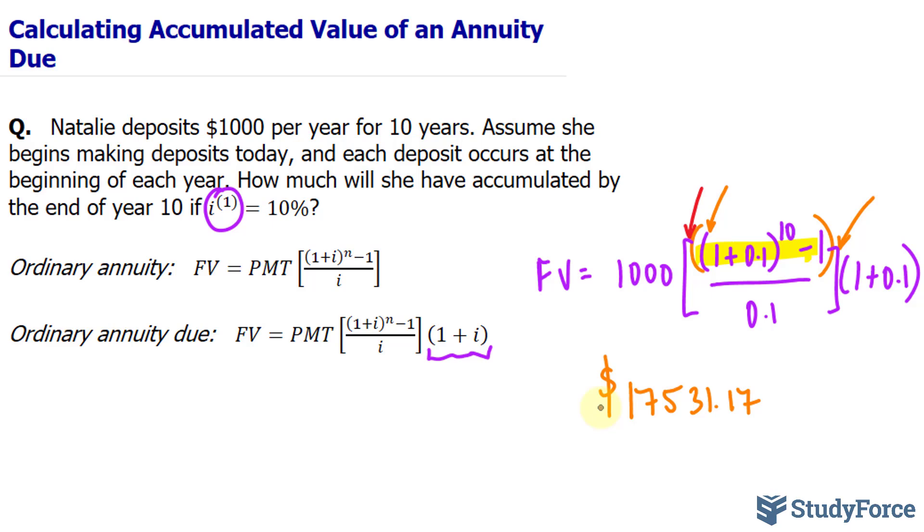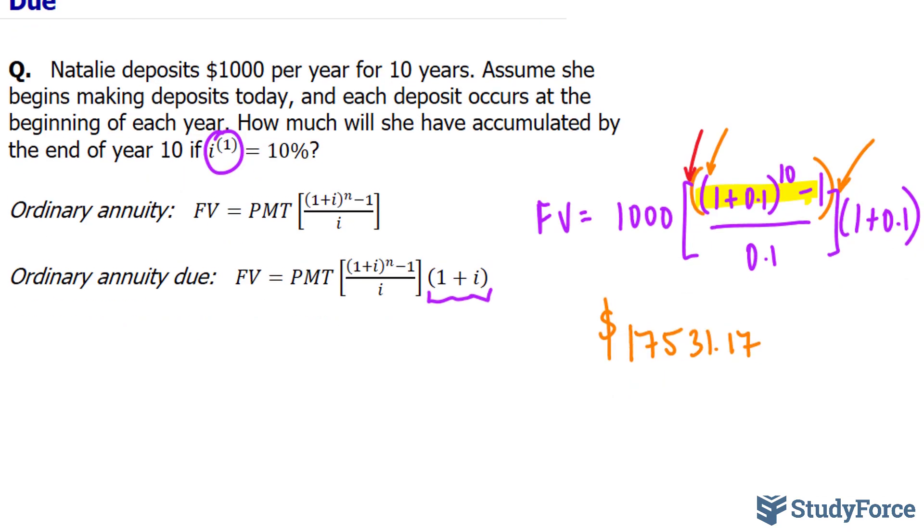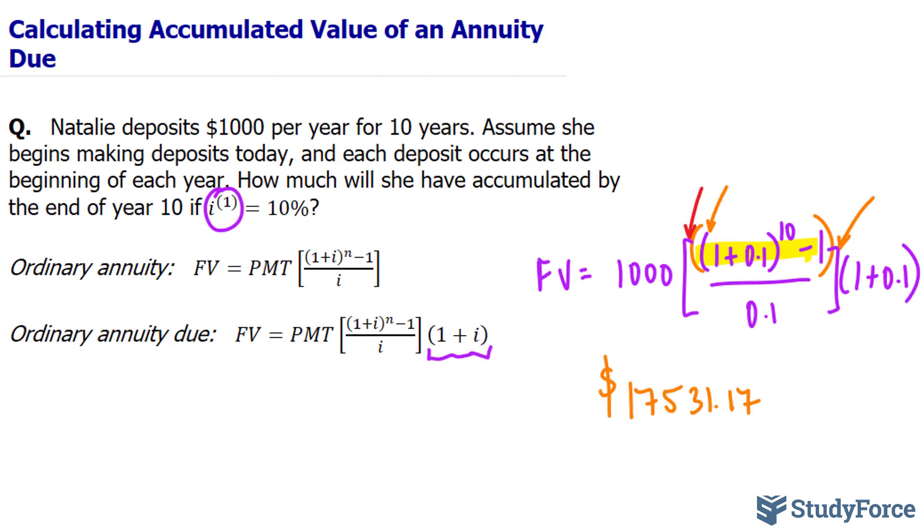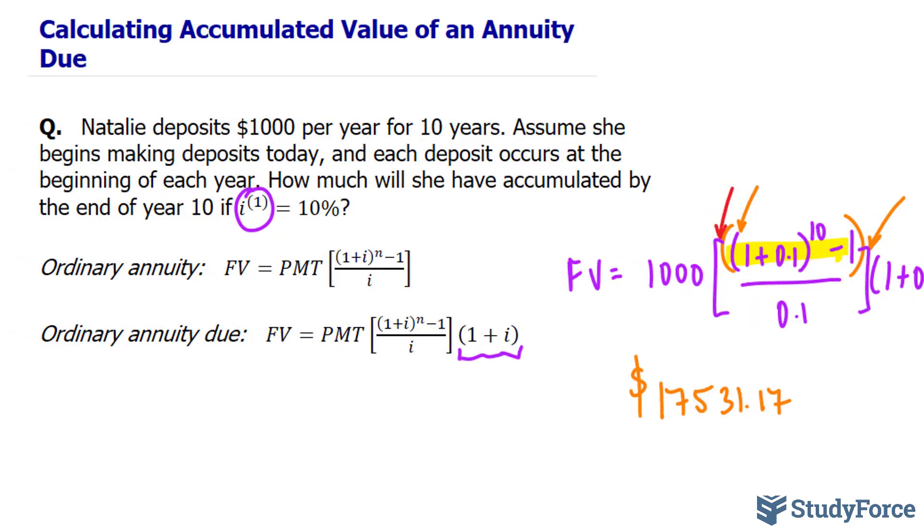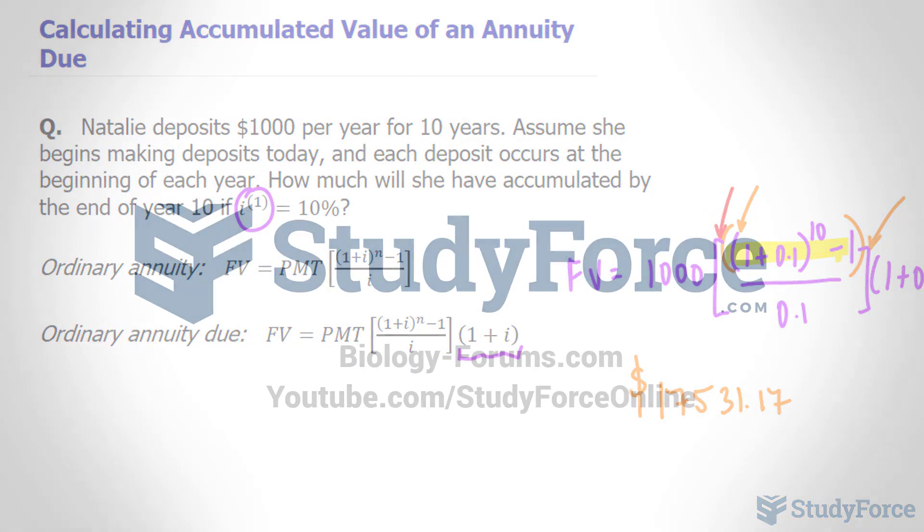So hypothetically, had Natalie not put the $1,000 into an account that is compounded annually, after 10 years she would have only accumulated $10,000, since 10 times 1,000 is 10,000. Here, however, if we subtract 10,000 from the value on our screen of 17,000 and some change, clearly she has made more than $7,500 worth of interest within that 10-year period. And so there you have it, that is how to calculate accumulated value of an annuity due.